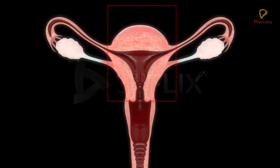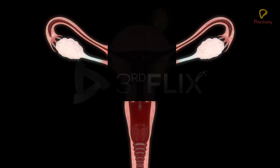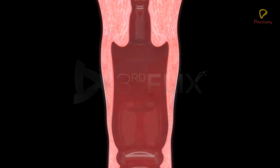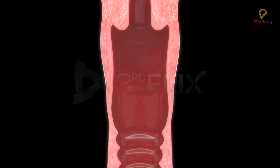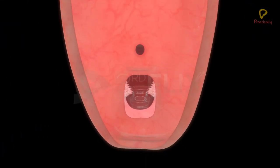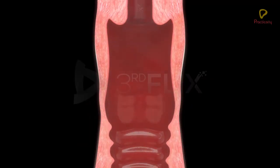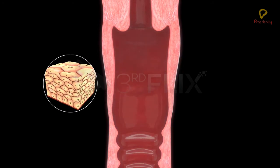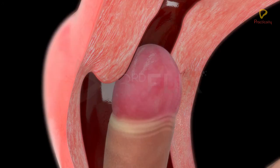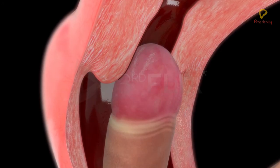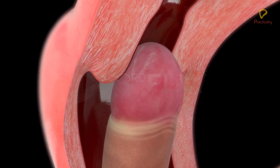Surgical removal of the uterus is called hysterectomy. In certain conditions like uterine fibroids or cancer, the uterus is surgically removed. The vagina is a large, median fibromuscular tube. It extends from the cervix to the vestibule. The vagina is internally lined by non-keratinized stratified squamous epithelium and is highly vascular. It serves to receive the penis during coitus, so it is called the copulation canal.